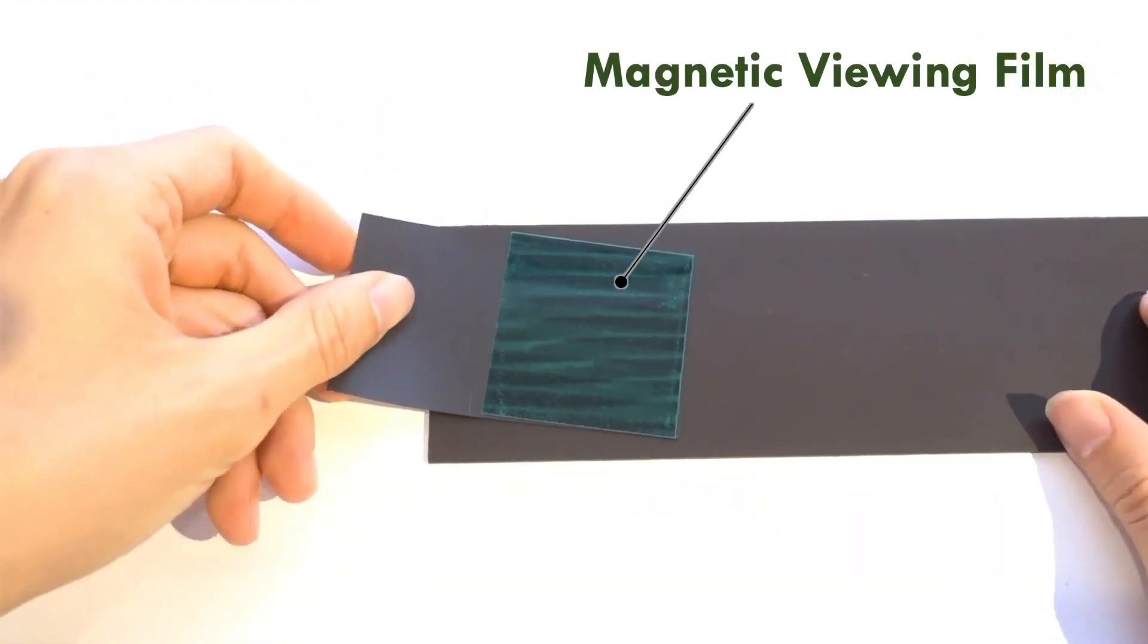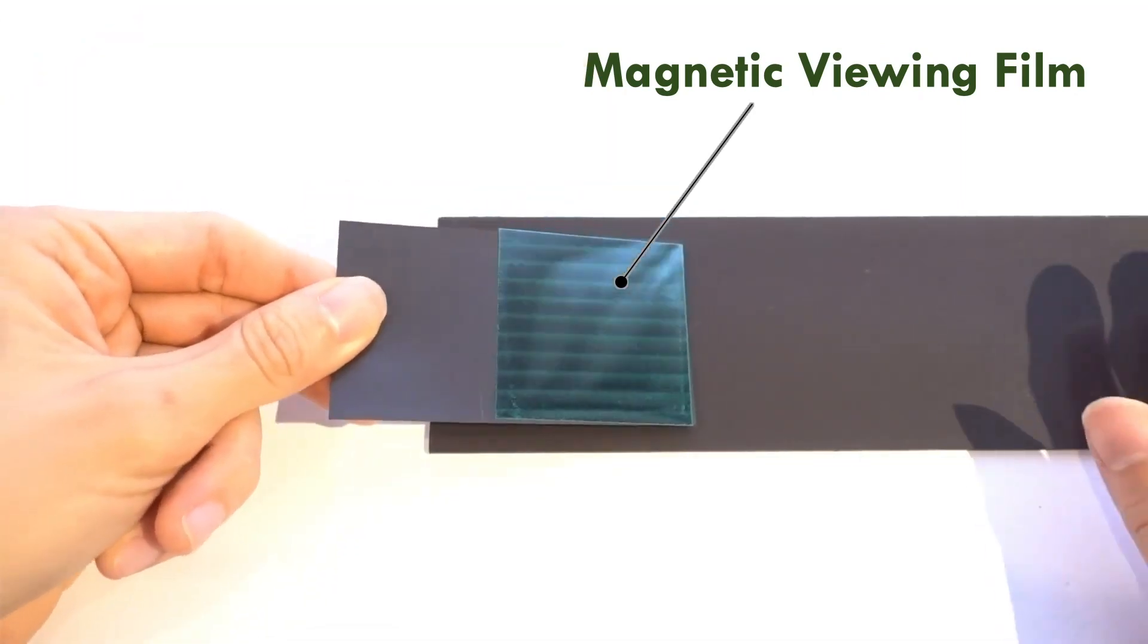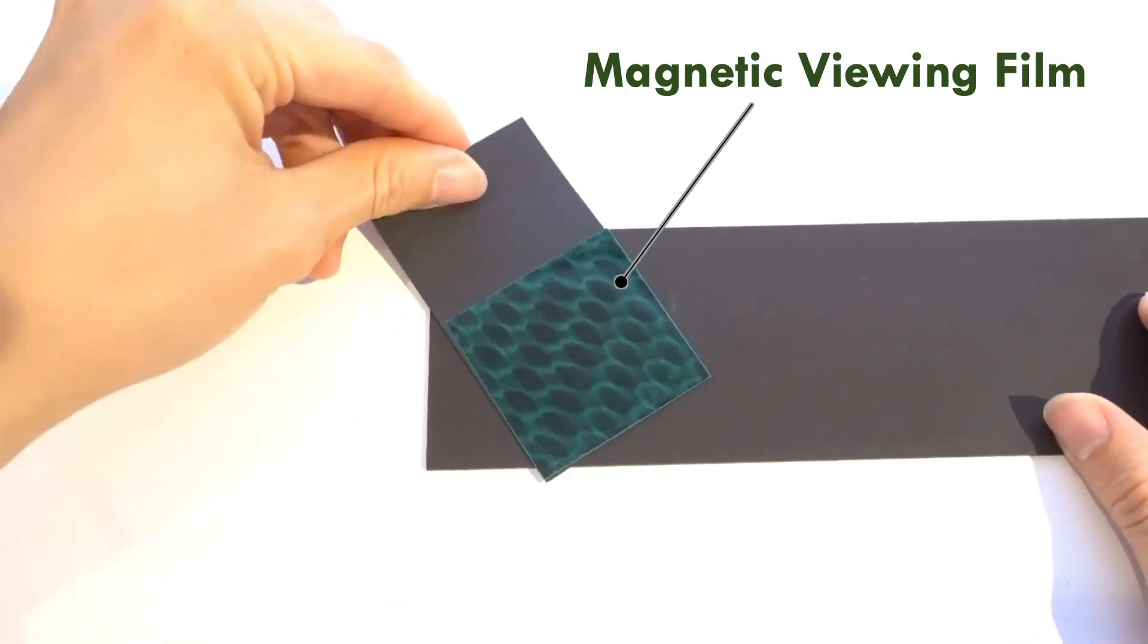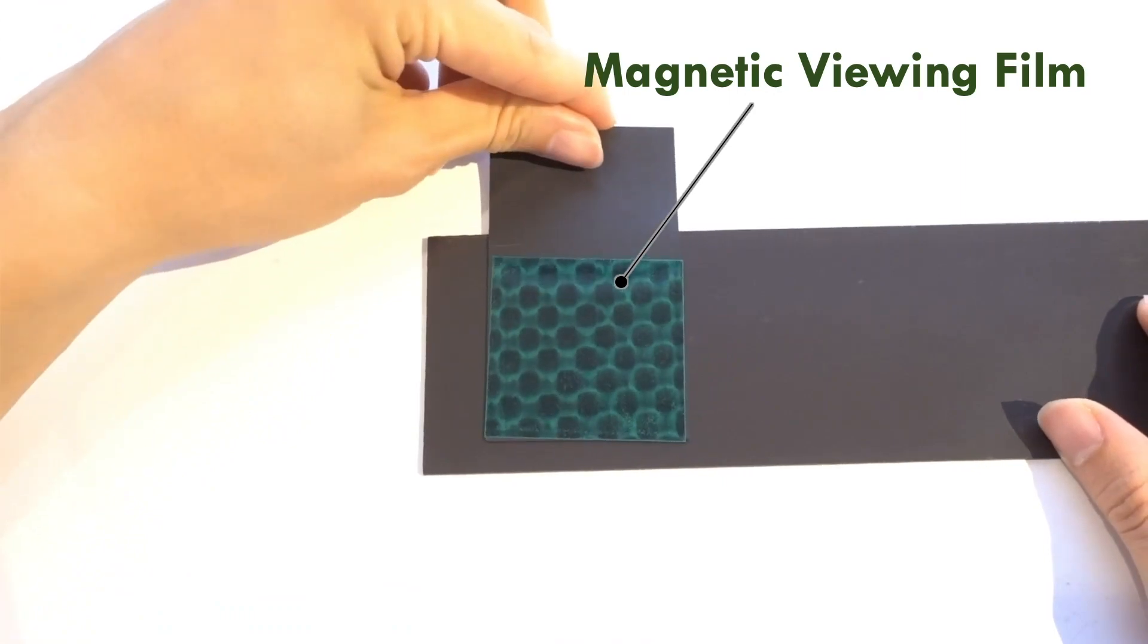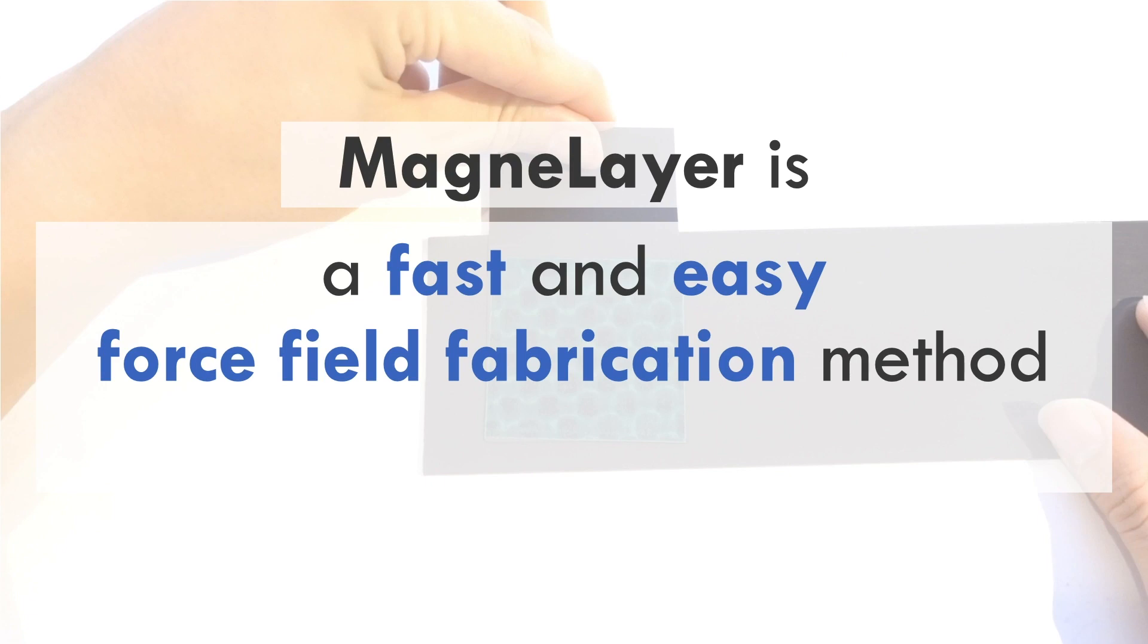By layering magnetic sheets that have simple magnetic stripes, complex geometric magnetic patterns can be created, and they can be used for tactile representations. In short, MagneLayer is a fast and easy force field fabrication method for haptic interactions.